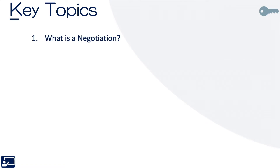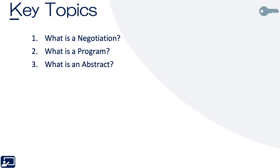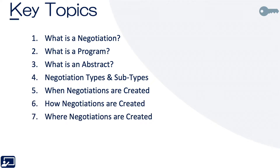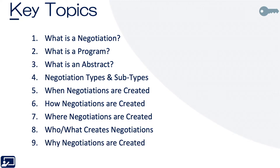Key topics for this lesson are as follows. First, what is a negotiation? Next, what is a program? Then, what is an abstract? We'll talk next about negotiation types and subtypes, when negotiations are created, how, where, who or what creates them, and finally, why are negotiations created?